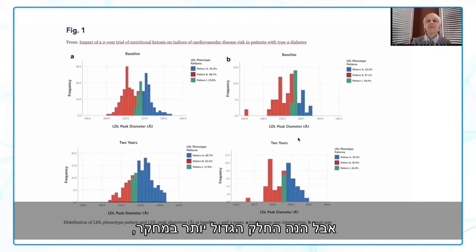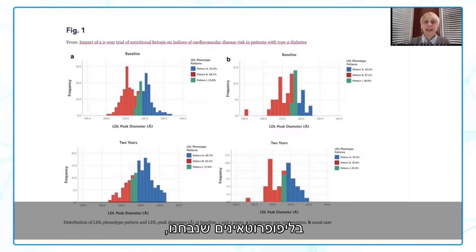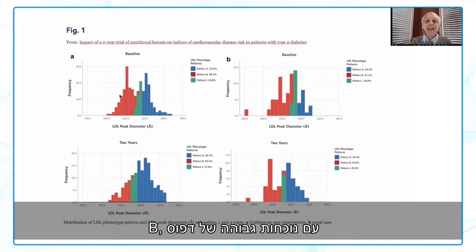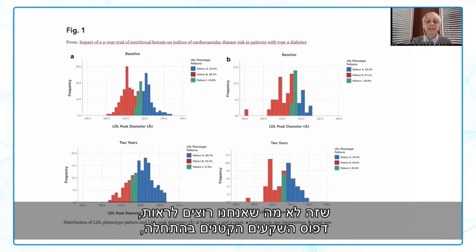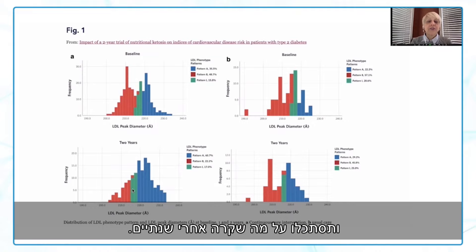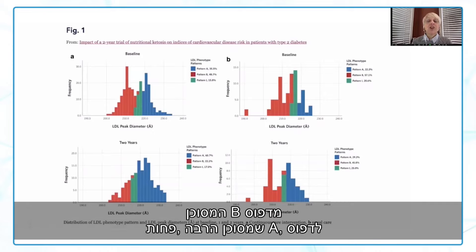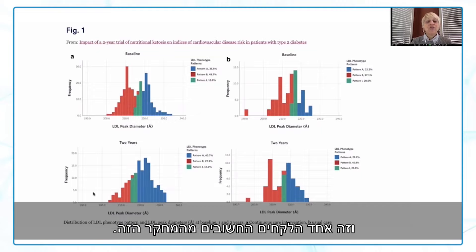The bigger story from our two-year cardiovascular paper — recently published — is what happened to lipoprotein patterns. At baseline, there was a high predominance of pattern B, the small dense high-risk pattern. After two years, there was a huge difference — a major shift in LDL phenotype from high-risk pattern B to much lower-risk pattern A. There was no change in LDL-P, ApoB, non-HDL, and CIMT, pushing back against the idea that this eating pattern increases cardiovascular risk.